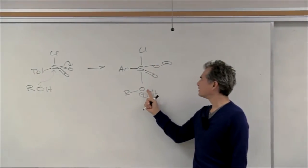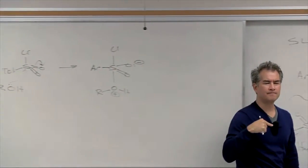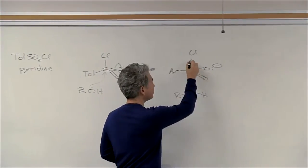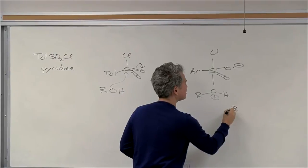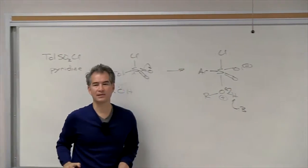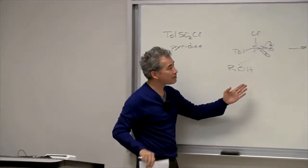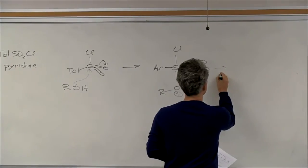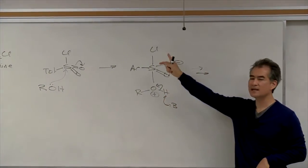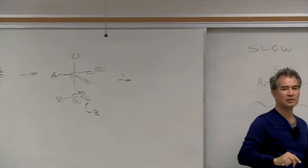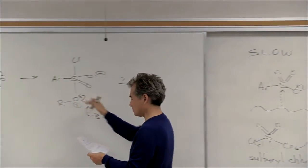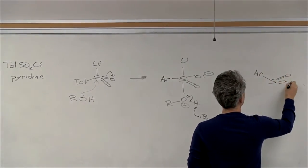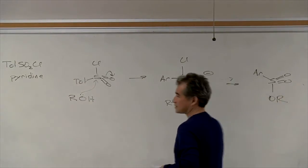Now we're ready in the second step to pop off the chloride. But what happens faster — do I pop off the chloride faster or do I deprotonate faster? Under these conditions, the chloride will leave faster if we first pull the proton off of the axial ligand. After we pull that proton off, this will leave much faster. So: deprotonate first, and then pop off the chloride. It will leave much faster if you don't have a positive charge on one of those ligands. That's the mechanism for substitution to make a tosylate leaving group.